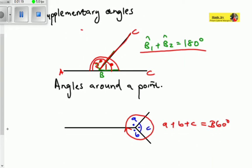And then we have got angles around the point. Angles around the point — from this point we are creating angle A, and then angle A plus angle C plus angle B will result in 360 degrees. So if you add the total of those, it must give you 360 degrees. That's a whole revolution.